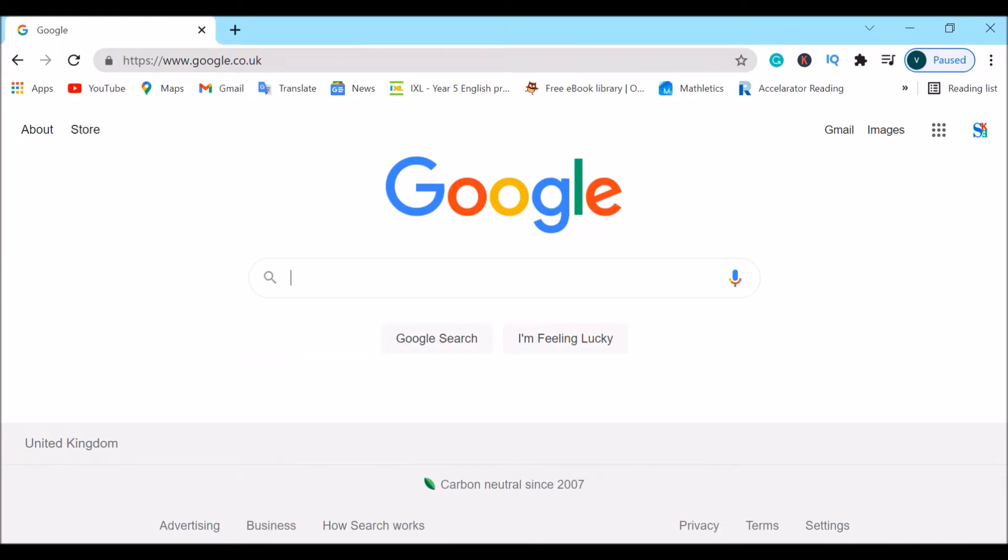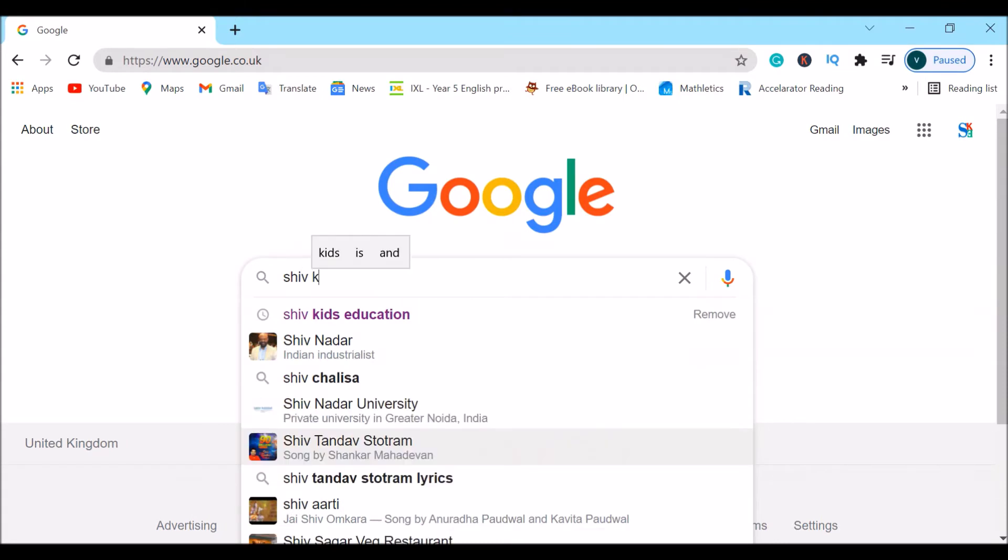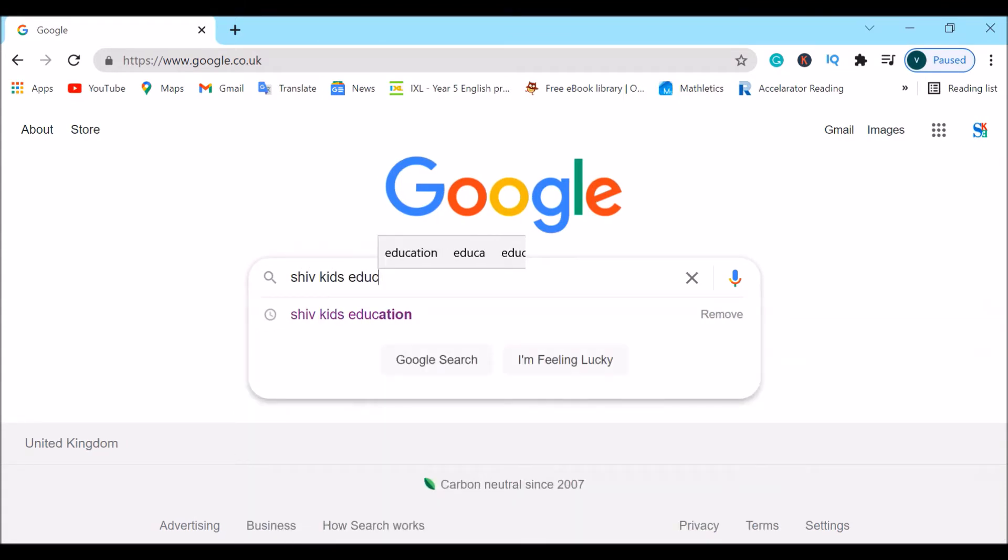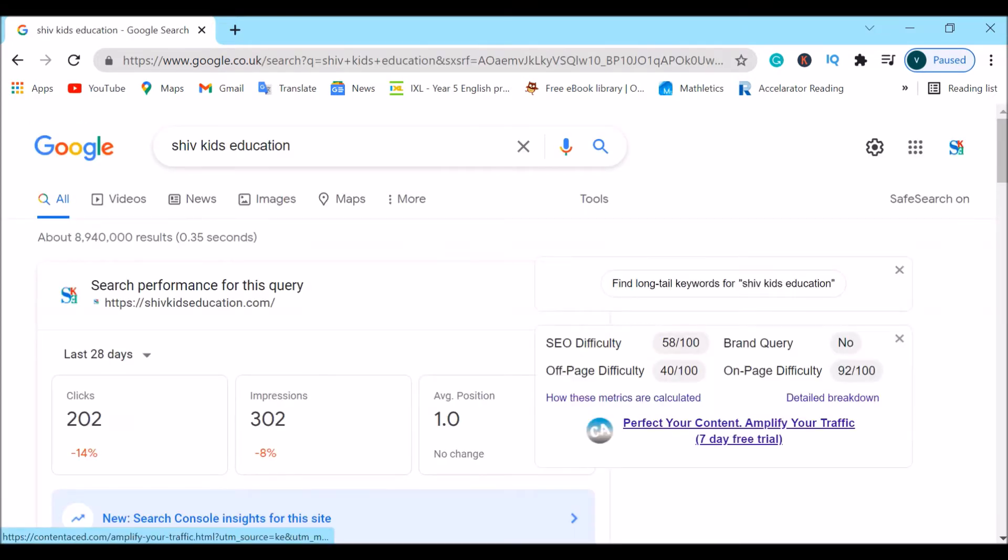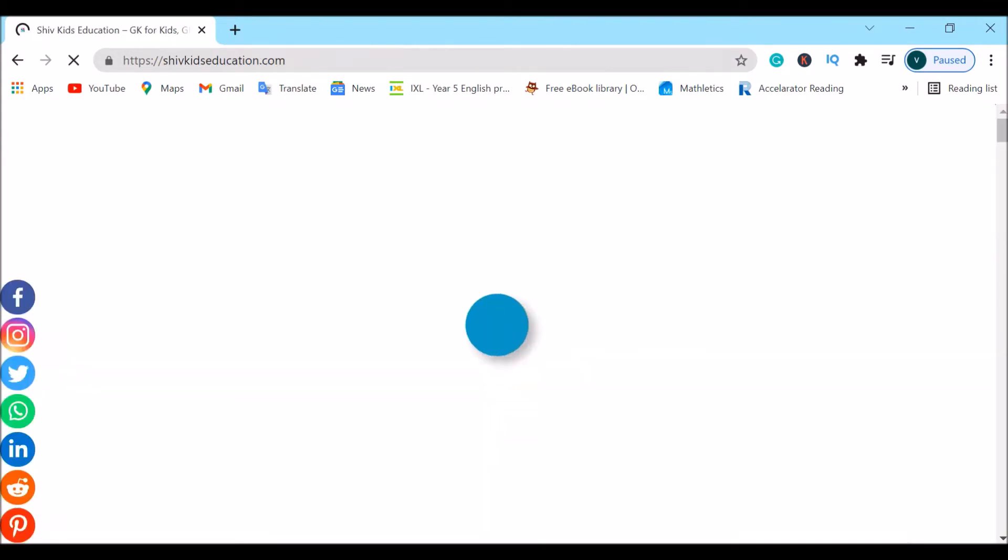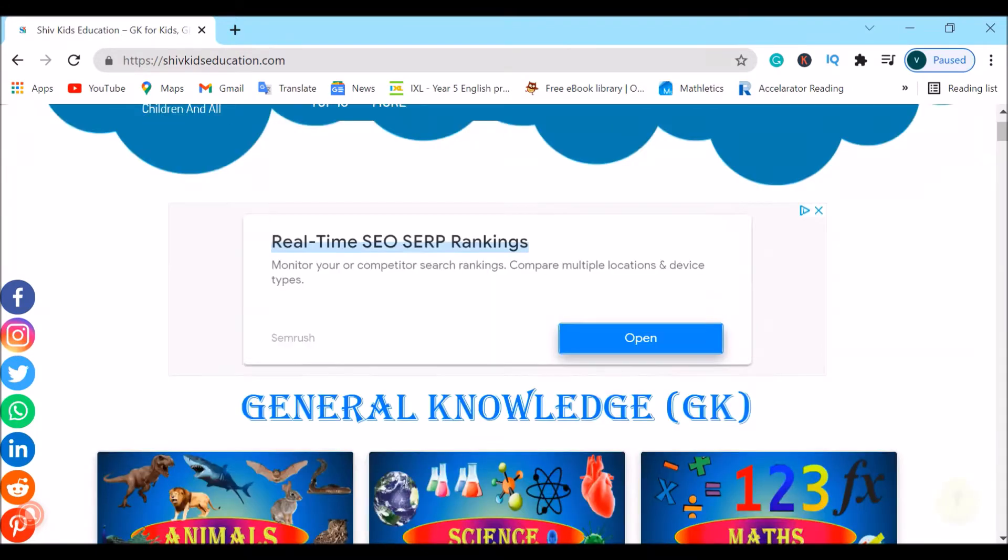Go to Google and search ShivKidsEducation and click enter. You should see this page. Scroll down and click on the first link which will bring you to our website ShivKidsEducation.com. Let's wait for it to load and here we are.